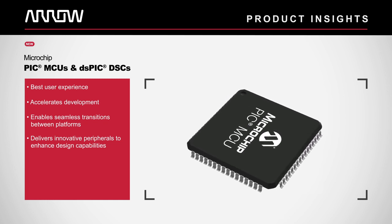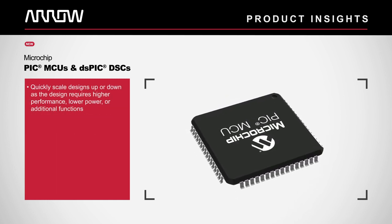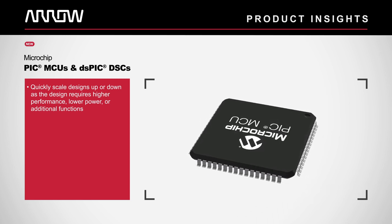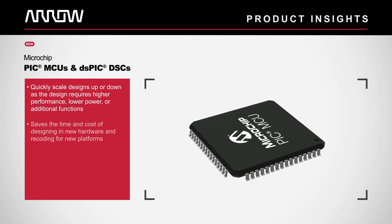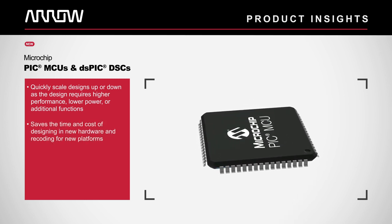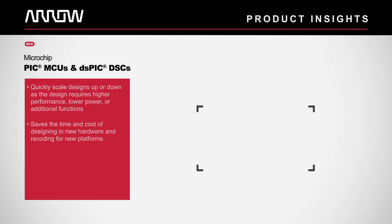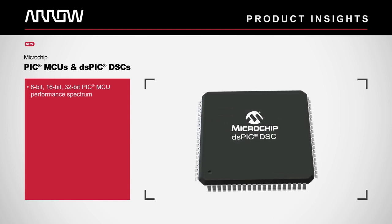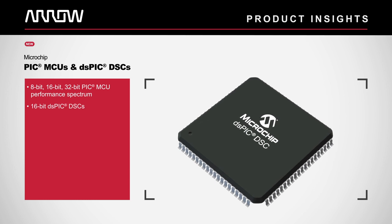The PIC microcontroller family allows developers to quickly scale designs up or down as the design evolves, requiring higher performance, lower power, or additional functions, saving the time and cost of designing in new hardware and recoding for new platforms. This is due to the common design ecosystem that covers the full 8- to 32-bit performance spectrum and protects the investment in code development.